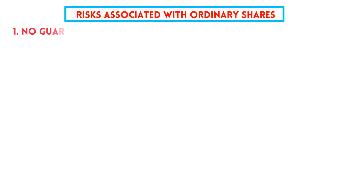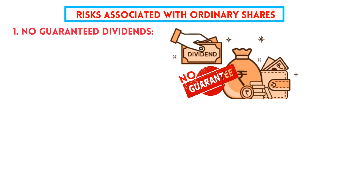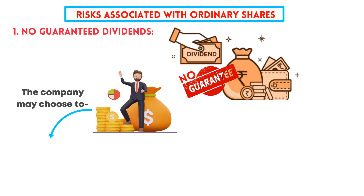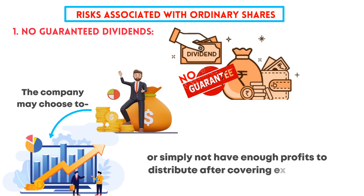Now let's talk about some risks associated with ordinary shares. First, no guaranteed dividends: as mentioned earlier, dividends for ordinary shares are not guaranteed. The company may choose to reinvest its profits for growth, or simply not have enough profits to distribute after covering expenses.